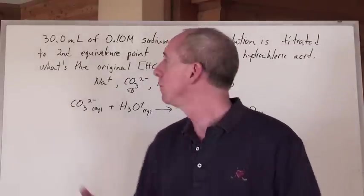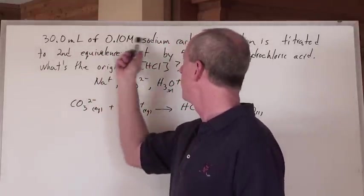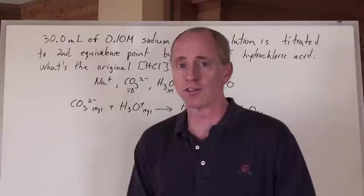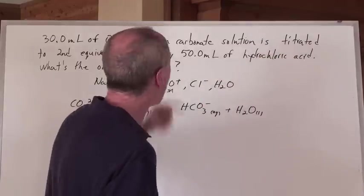What's happening is 30 milliliters of a 0.1 mole per liter sodium carbonate solution—we actually calculated the pH of that before and found it to be 11.65—that sodium carbonate is being titrated by, what does that mean?